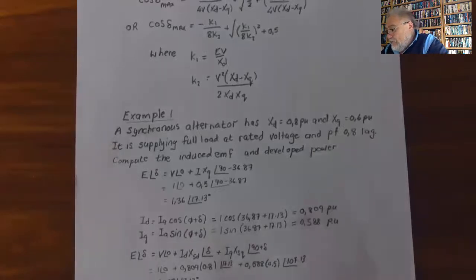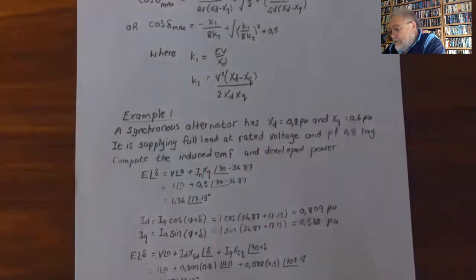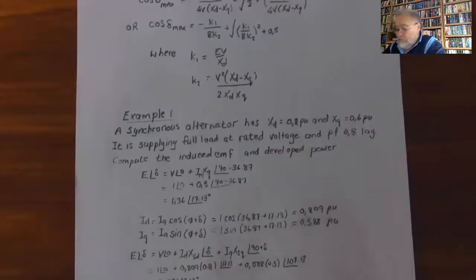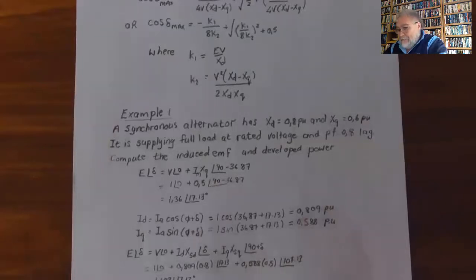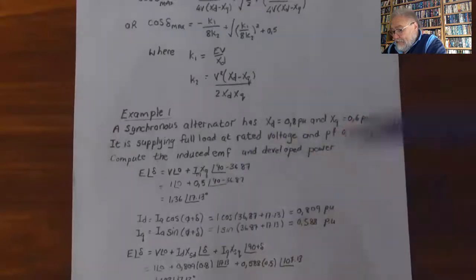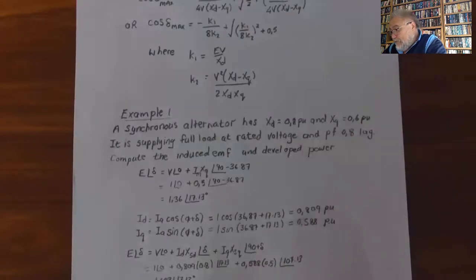First, we find the load angle: E = V∠0 + Im·Xq∠(90 − 36.87°), which gives a value of 1.36∠17.13°. We are not interested in the magnitude 1.36 — we just want the angle 17.13°. Now Id = Ia·sin(φ + δ) = 0.809 per unit, and Iq = Ia·cos(φ + δ) = 0.588 per unit.